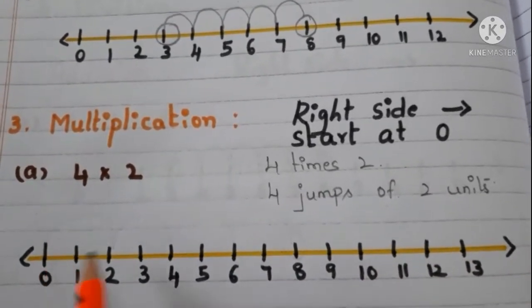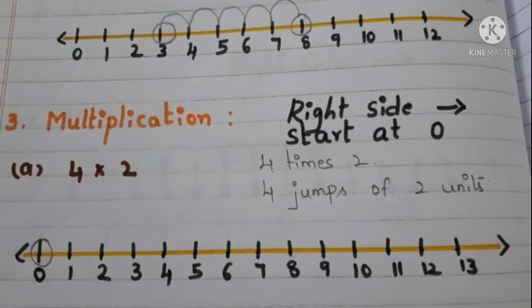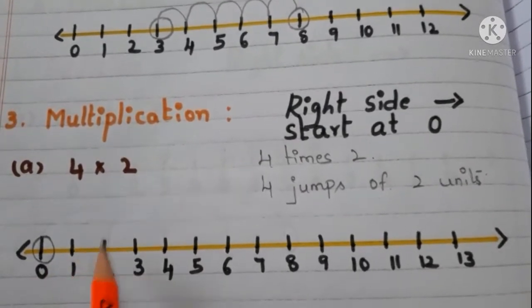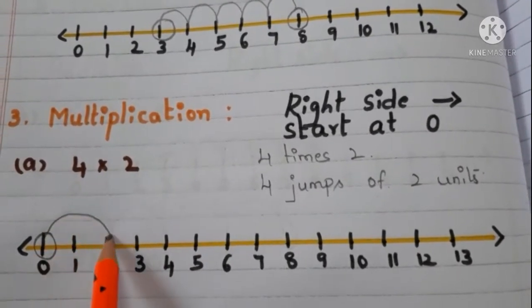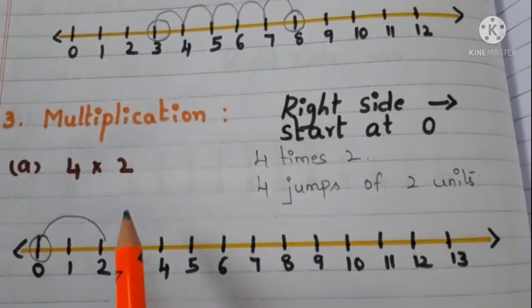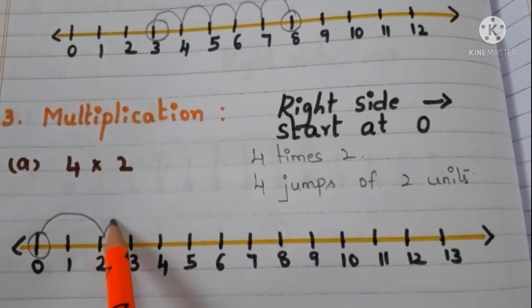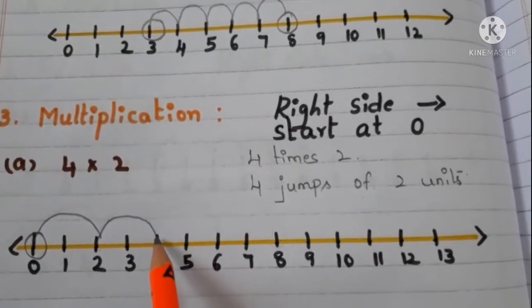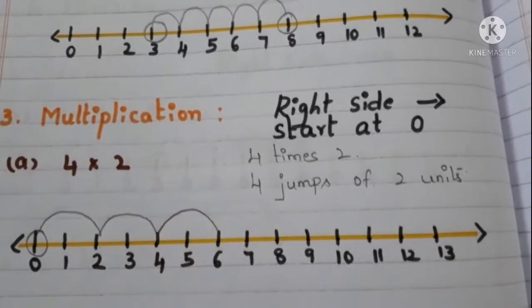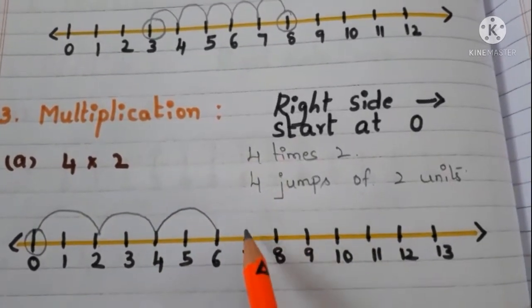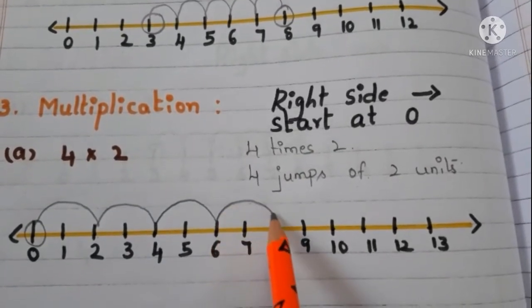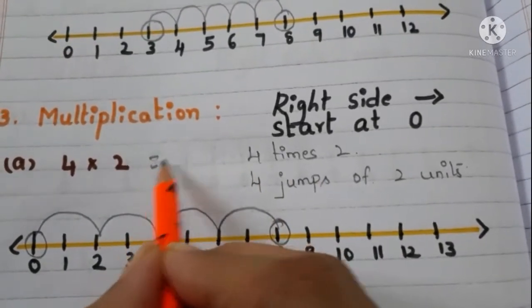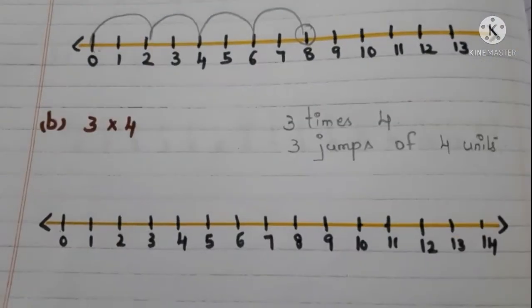First we start at 0. Now let us make the first jump of 2 units: 1, 2 — jump from here to here. Second jump of 2 units: 1, 2 — jump from here to here. Third jump of 2 units: 1, 2 — jump from here to here. Fourth jump of 2 units: 1, 2 — jump from here to here. So what is the answer? 8.